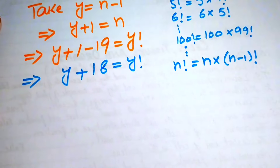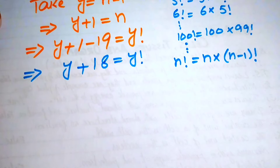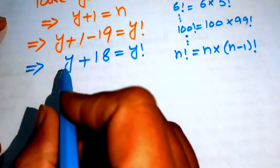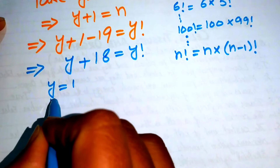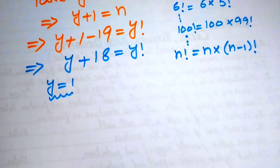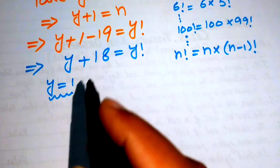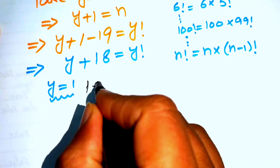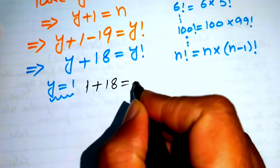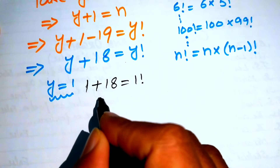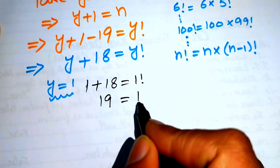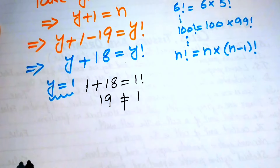We find the value of y by inspection. When we take y equals 1, we get 1 plus 18 equals 1 factorial, which gives 19 equals 1. Since 19 is not equal to 1, y equals 1 is not possible.